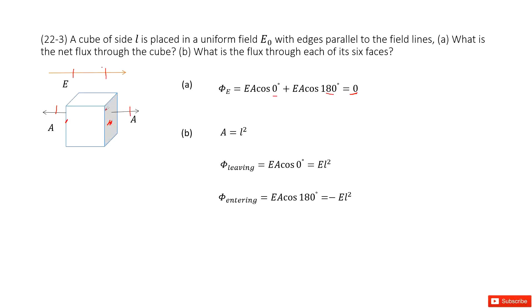And then when this electric field leaves, so when it leaves just as this one, the angle is zero. So E·A cosine zero. So it becomes E·L².